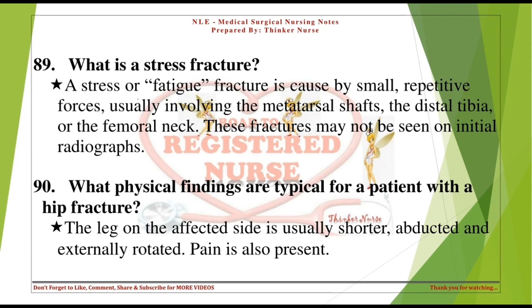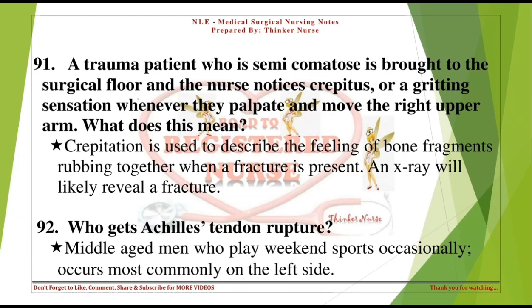What physical findings are typical for a patient with a hip fracture? The leg on the affected side is usually shorter, abducted, and externally rotated. Pain is also present. A trauma patient is found to have crepitus — a gritting sensation — when the right upper arm is palpated and moved. Crepitation describes the feeling of bone fragments rubbing together when a fracture is present; an X-ray will likely reveal a fracture.